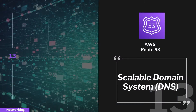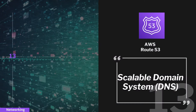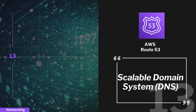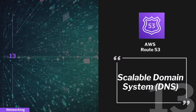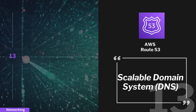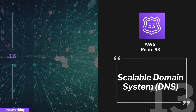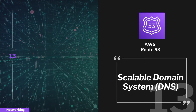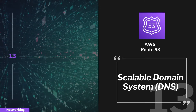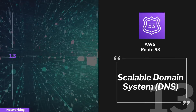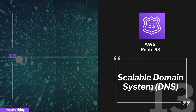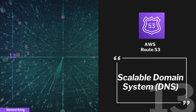Number 13 on the list is AWS Route 53. AWS Route 53 is a highly available and scalable cloud Domain Name System web service. It's designed to give developers and businesses an extremely reliable and cost-effective way to route end users to internet applications.